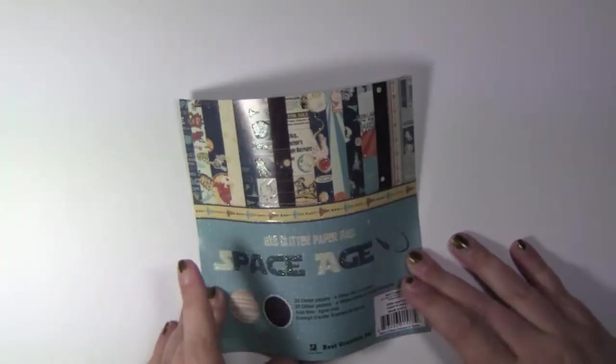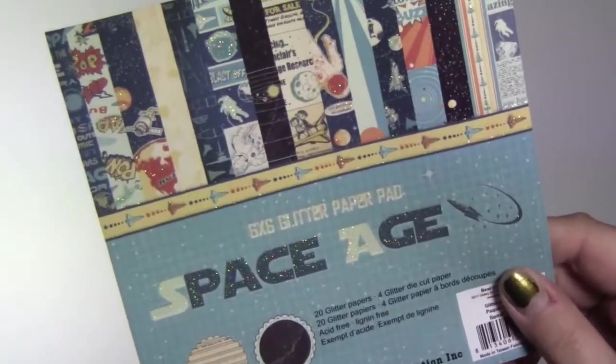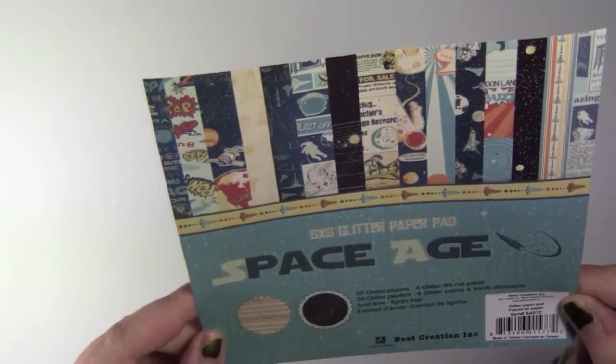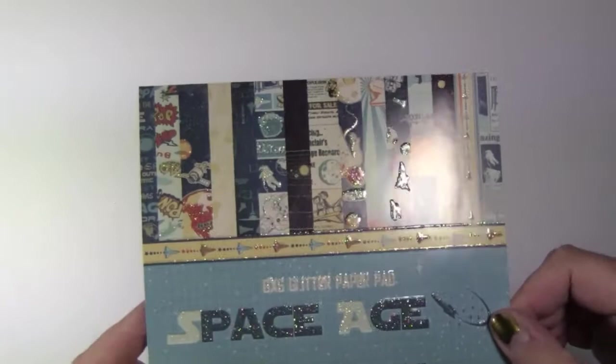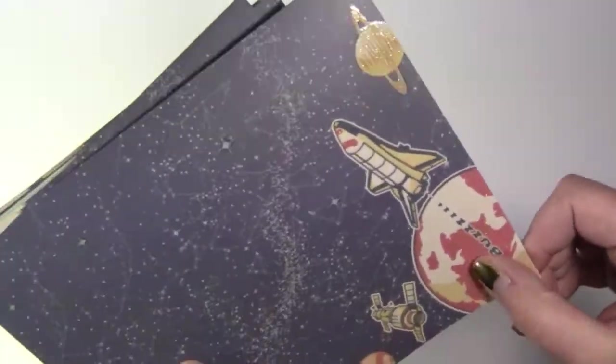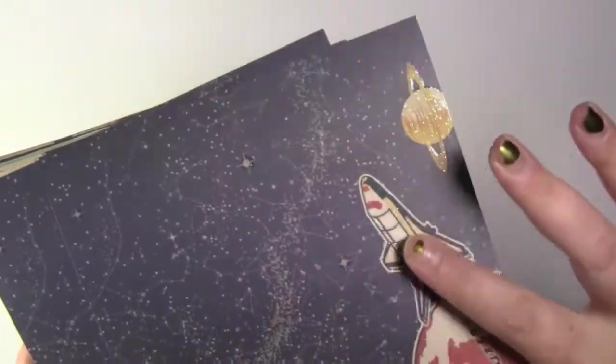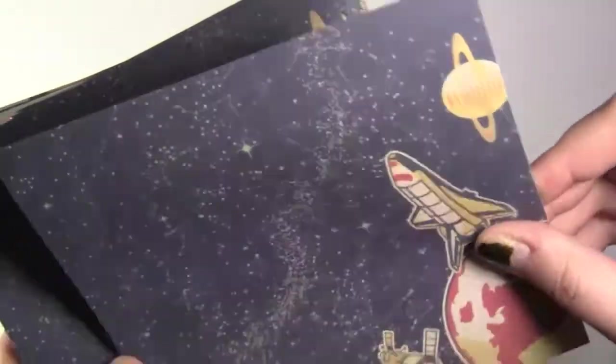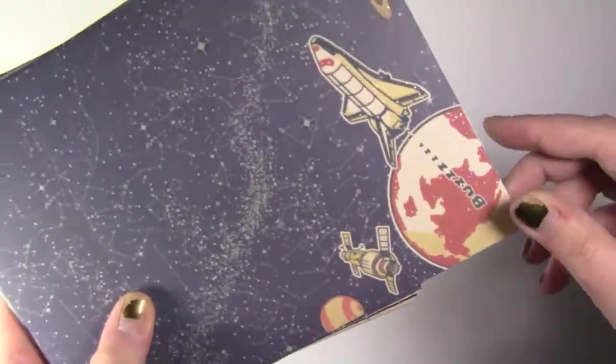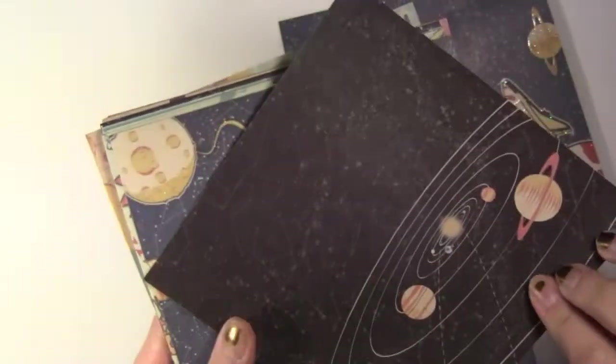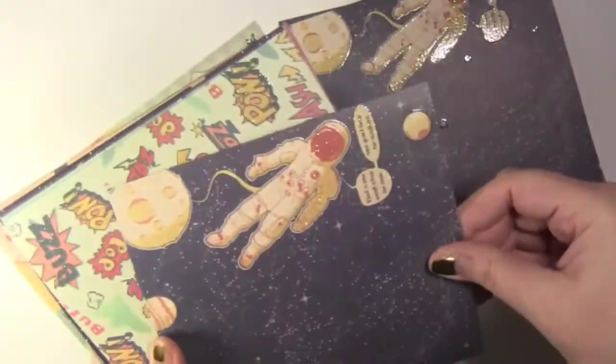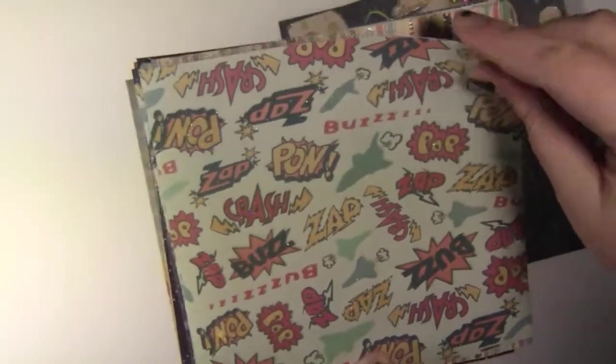I'm using this Space Age glitter paper pad. I bought this off of scrapbook.com. It's by Best Creation. I've never heard of them but everything is glittery and who doesn't like glitter? So I'm going to show you the pages. Like I said, it's not done yet so I don't know if I'm using all of these or half of these, but these are double-sided and like I said these are raised and glittery. So we have little spaceships and then that. There's two of each. An astronaut, a solar system. This one's really cool.